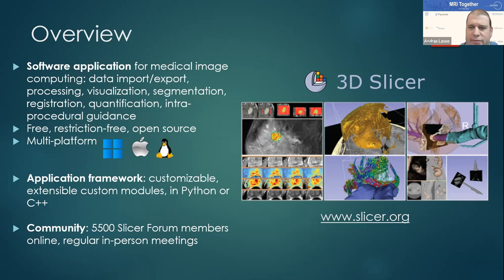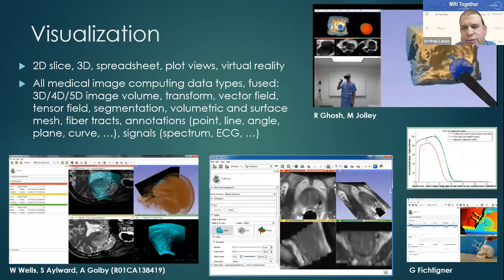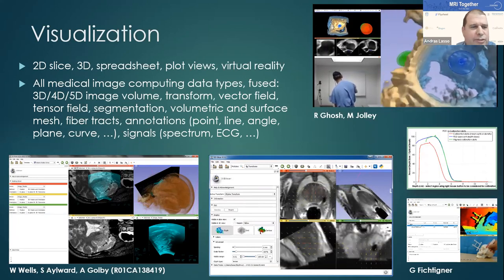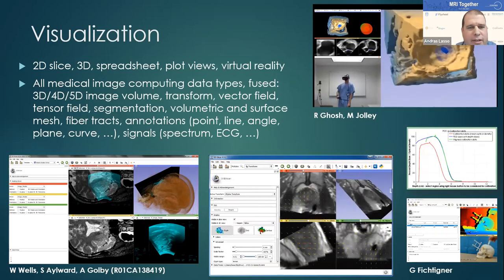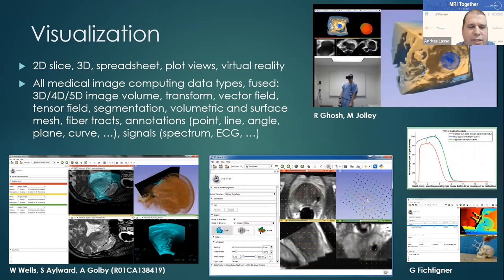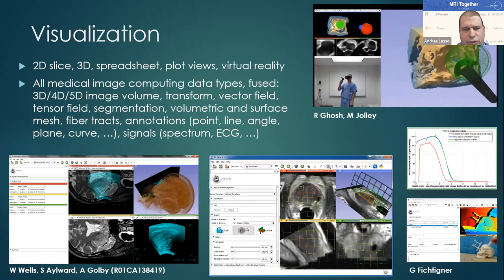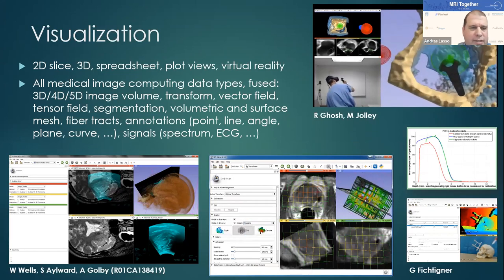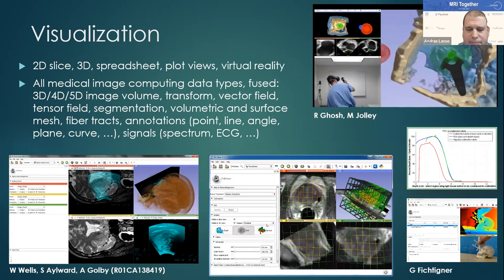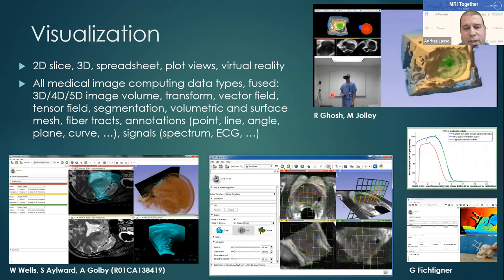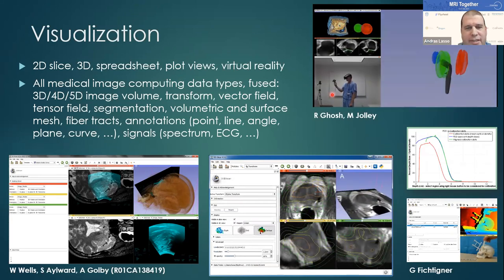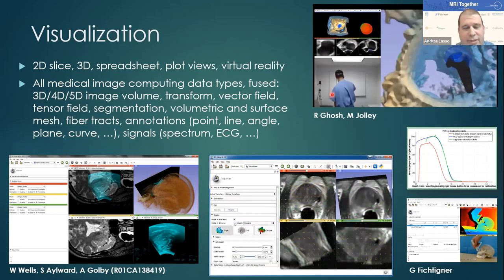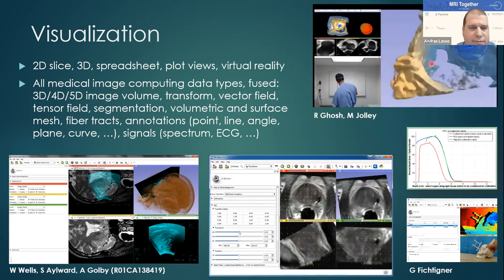Many of you may have heard about Slicer, and some may use it as well. For those who don't know Slicer or used it many years ago, I'll quickly summarize some features important for MRI imaging. You can load volumes and view them in 2D and 3D views, and also in table views or plot views. Not too long ago we added a virtual reality display, so with one click you can see content in an immersive view with any VR headset, interact with the data, and move things around.